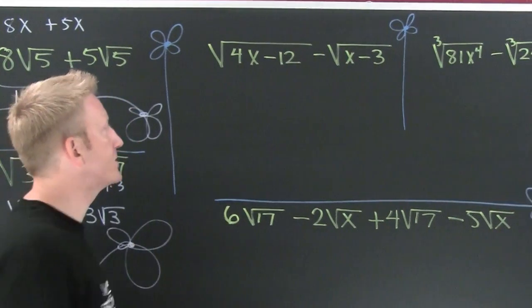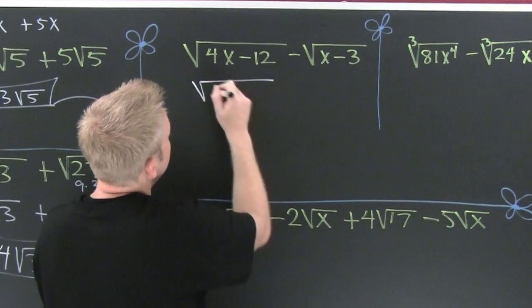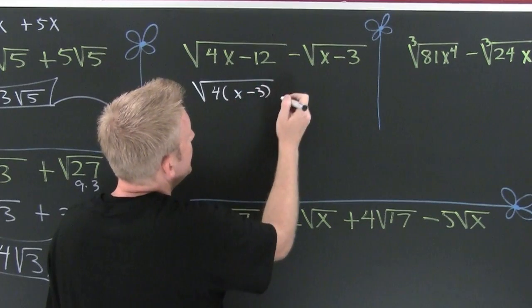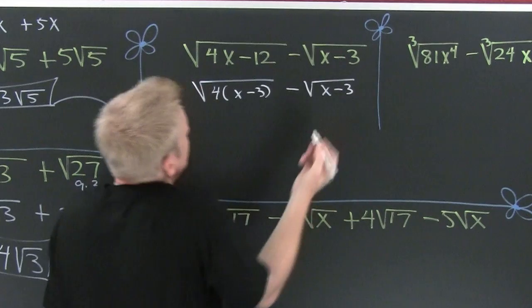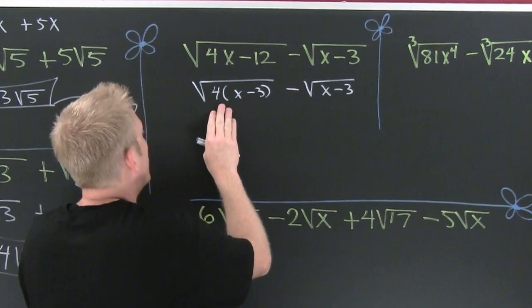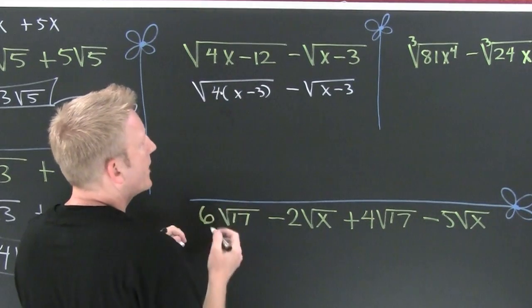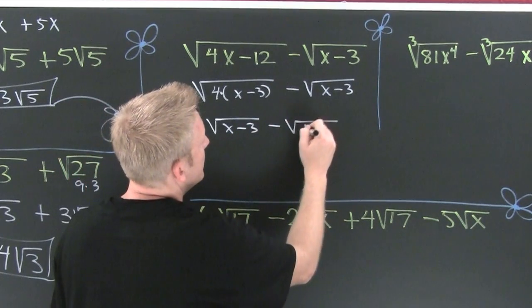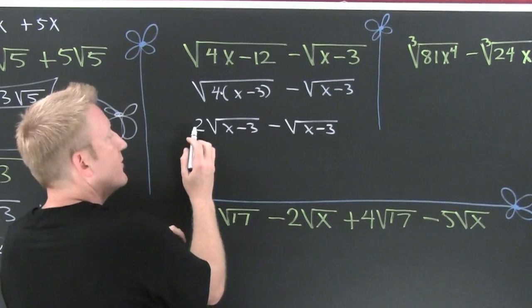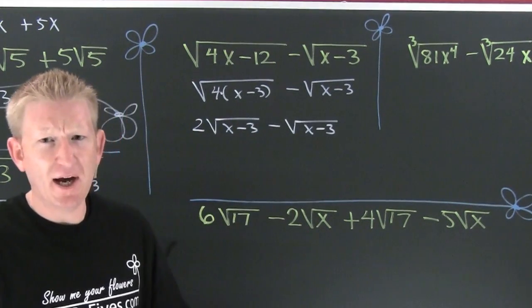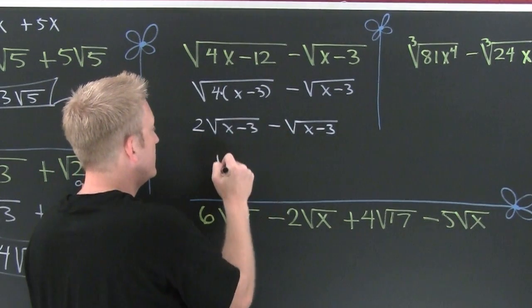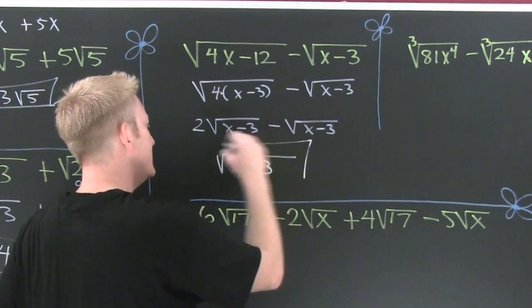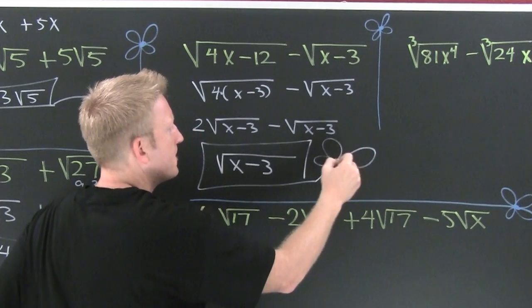Here I have the square root of four times (x minus three) minus the square root of (x minus three). We're trying to get like radicals so we can add or subtract them. The root of a product is the product of the roots, and the square root of four is two, so this becomes two root(x minus three) minus the square root of (x minus three). Two minus one is one root of (x minus three).